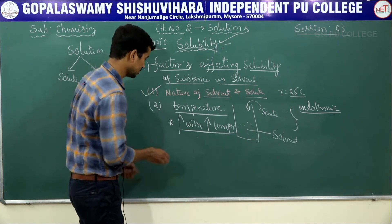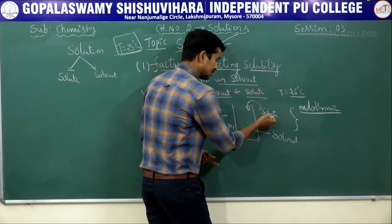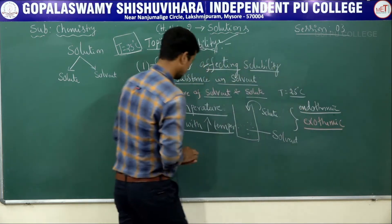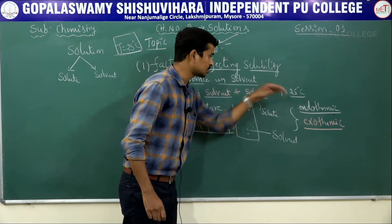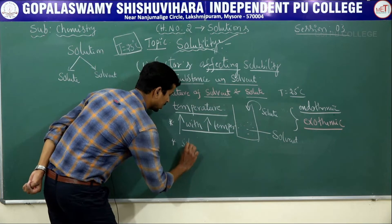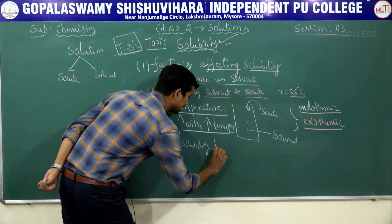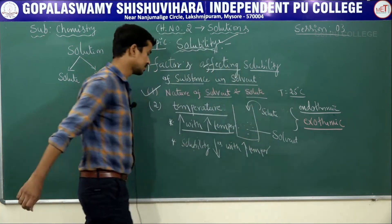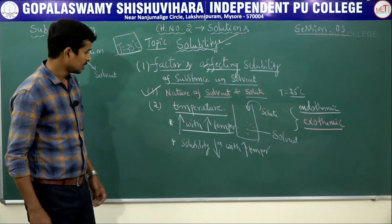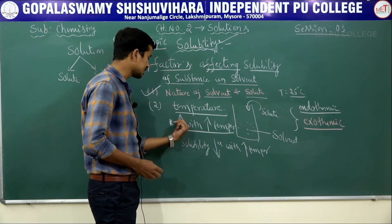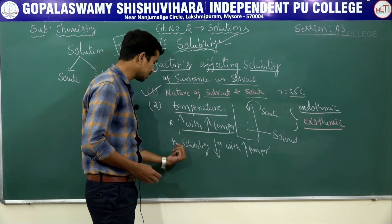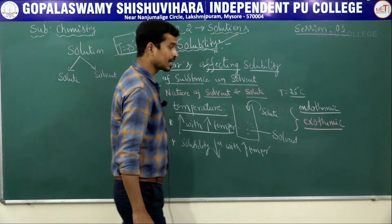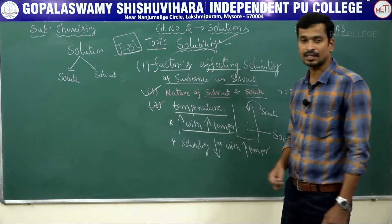Suppose the solubility of a solute in a solvent is exothermic in nature — meaning heat is liberated from the system to the surroundings. In this case, solubility decreases with increasing temperature. So: endothermic → solubility increases with temperature; exothermic → solubility decreases with temperature. These are the two important points for the second factor influencing solubility.